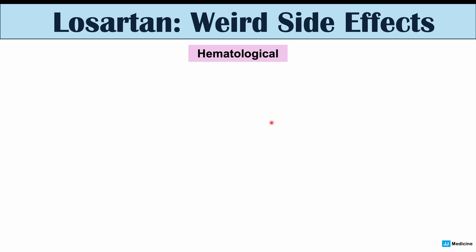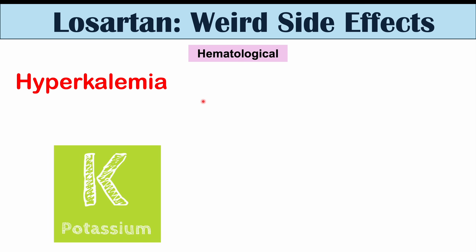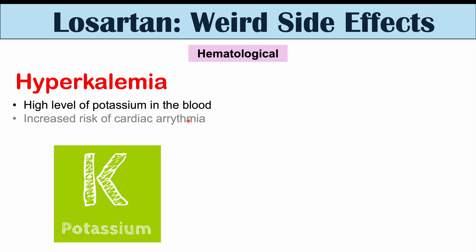Another weird hematological side effect of Losartan is hyperkalemia — a high level of potassium in the blood — which increases the risk of cardiac arrhythmias. This occurs because Losartan inhibits angiotensin 2 effects, and one of those effects is stimulating aldosterone release from the adrenal glands. Aldosterone normally helps the kidneys excrete potassium. Without aldosterone's effect, potassium accumulates in the blood, leading to hyperkalemia.